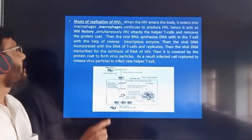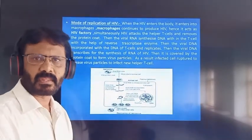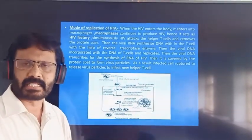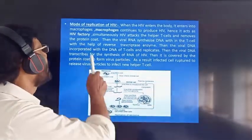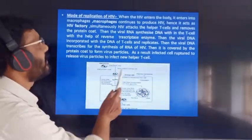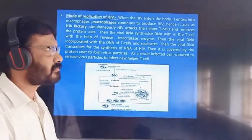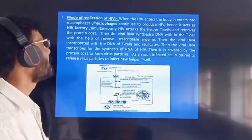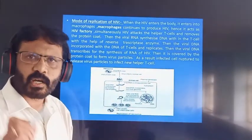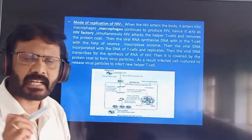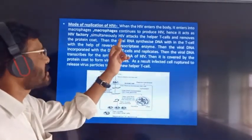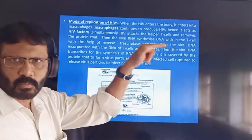Mode of replication of HIV: How does the HIV enter into the body? It enters into the macrophages. Macrophages continue to produce HIV, hence macrophage acts as an HIV factory.